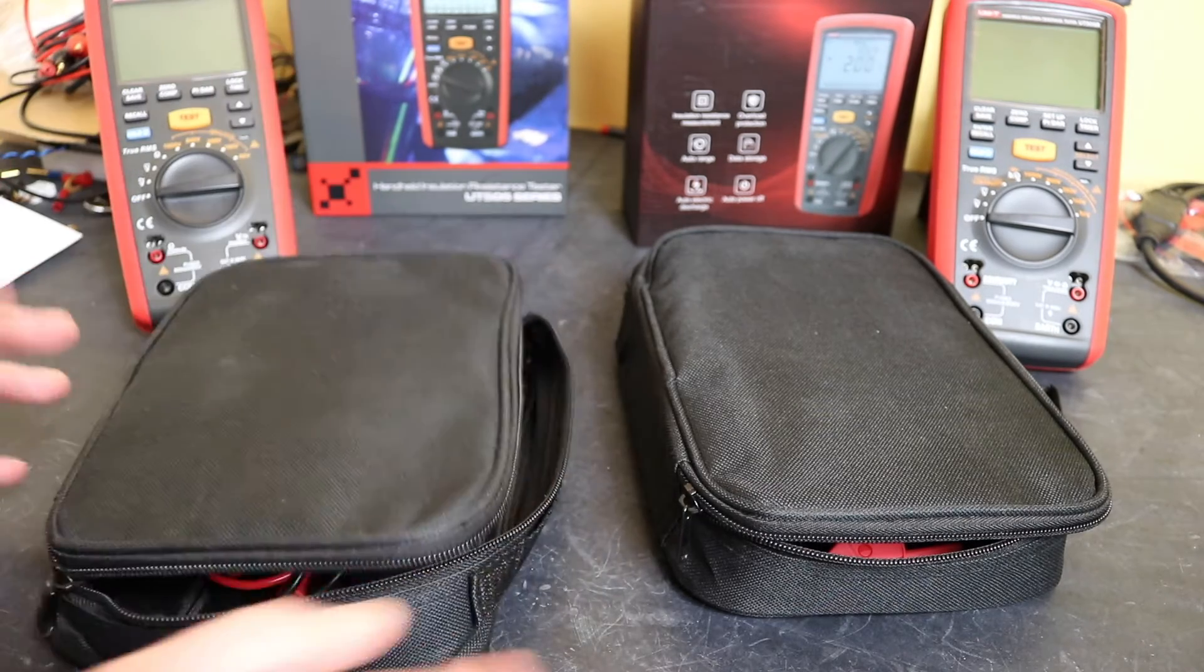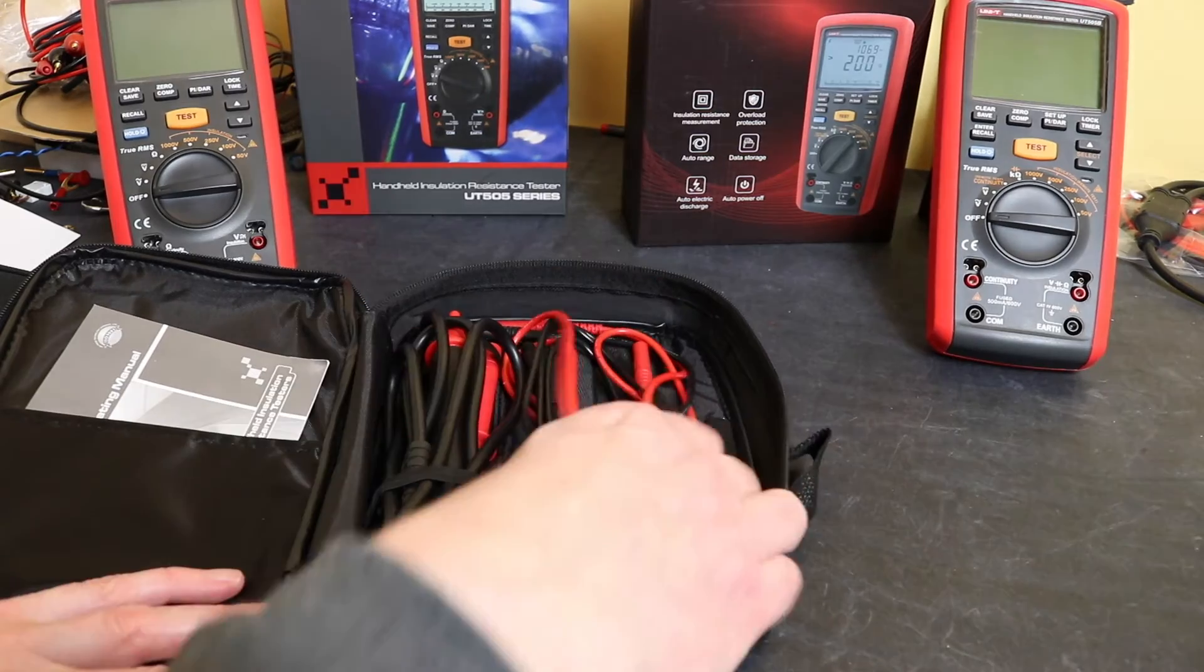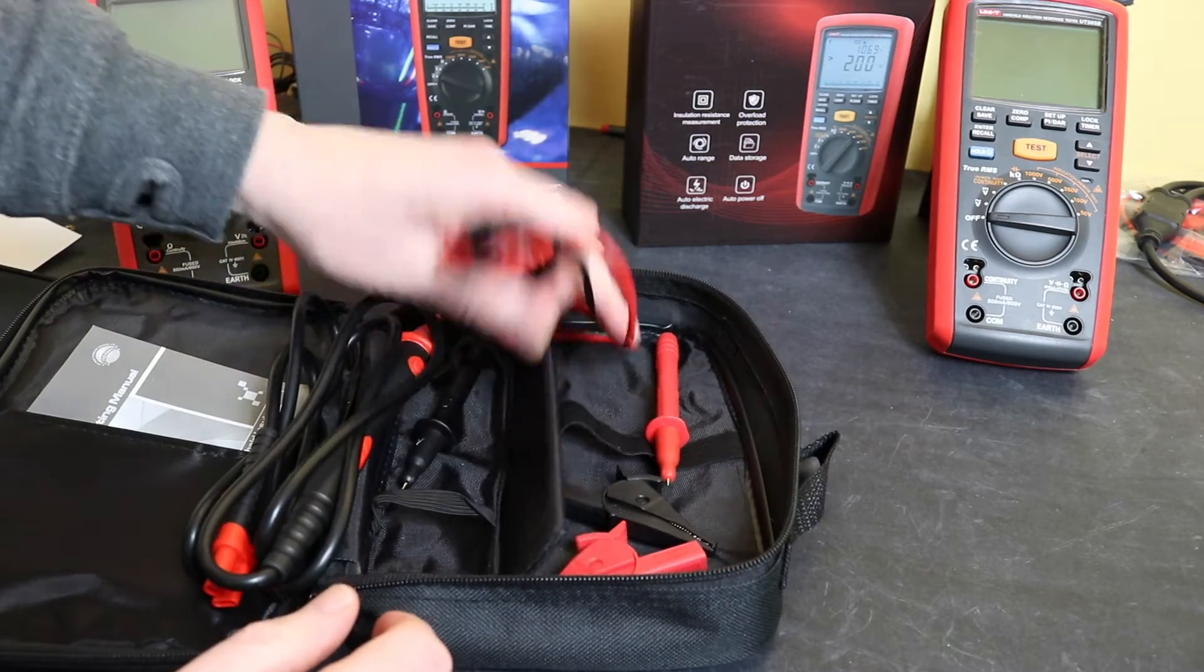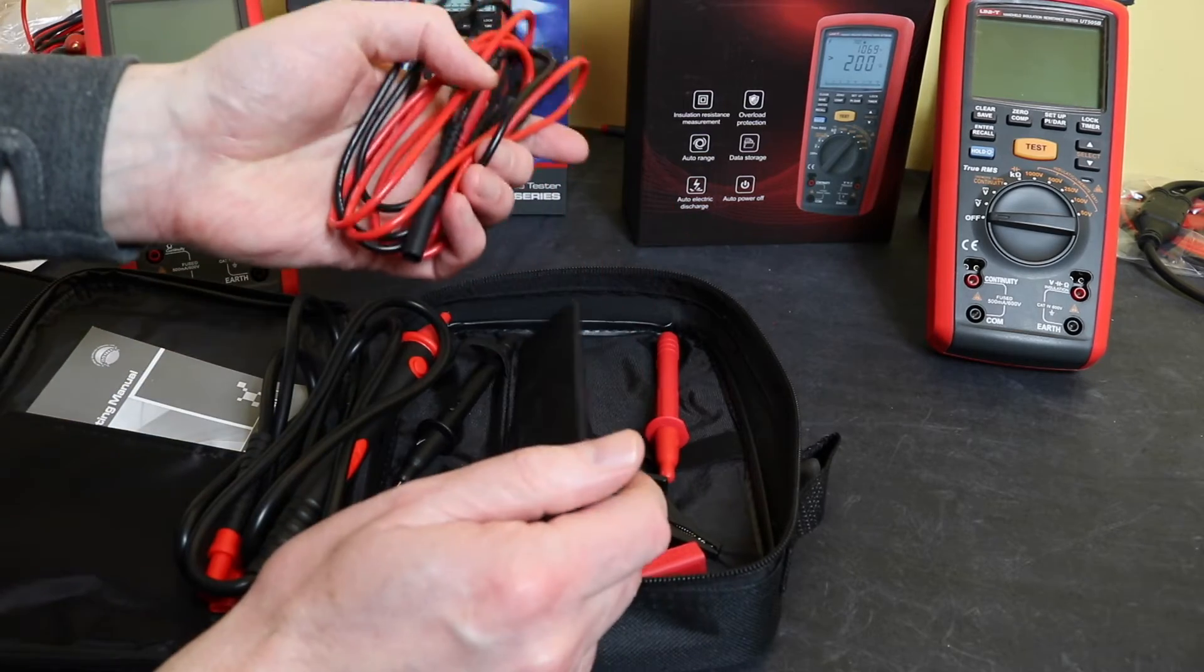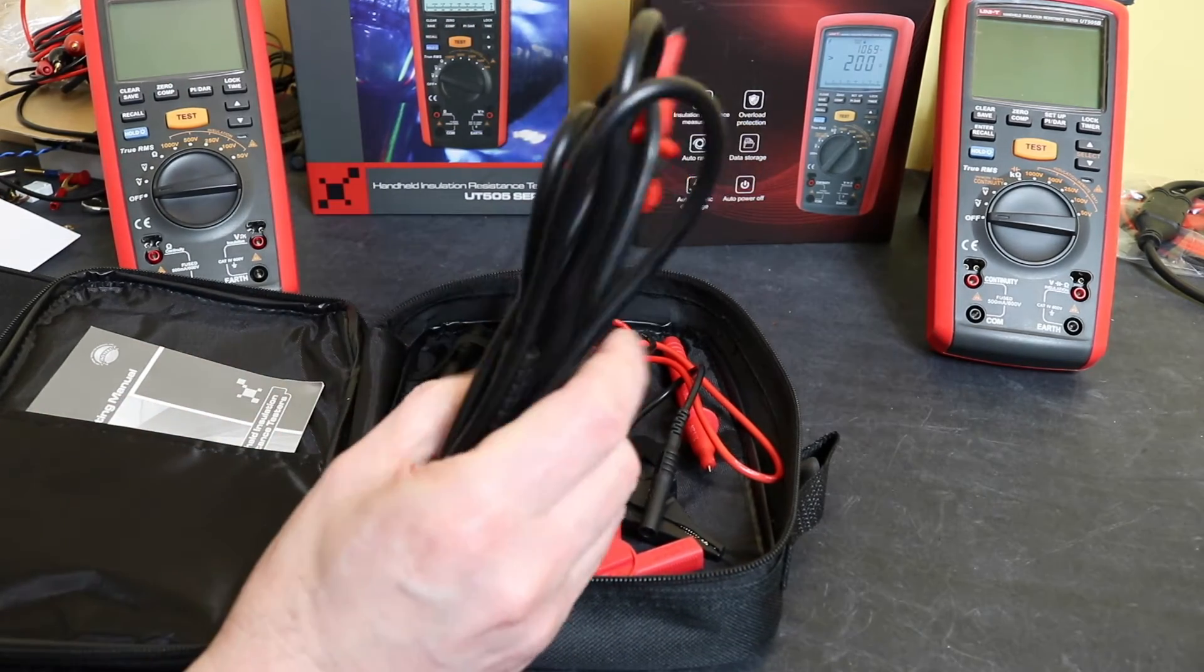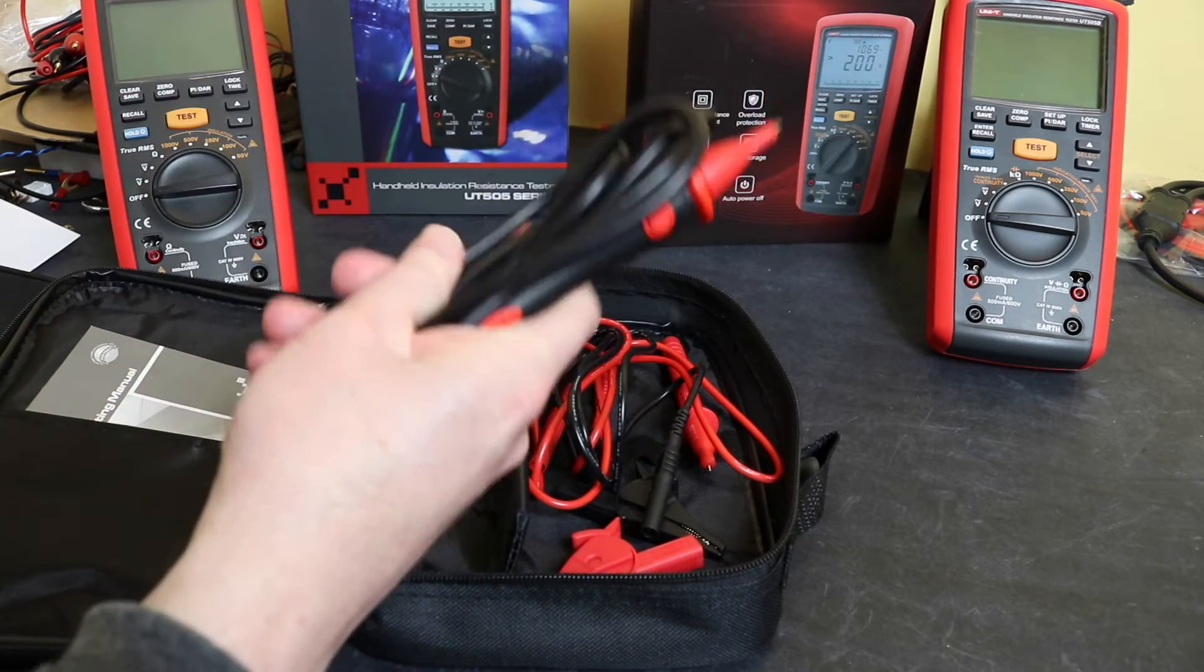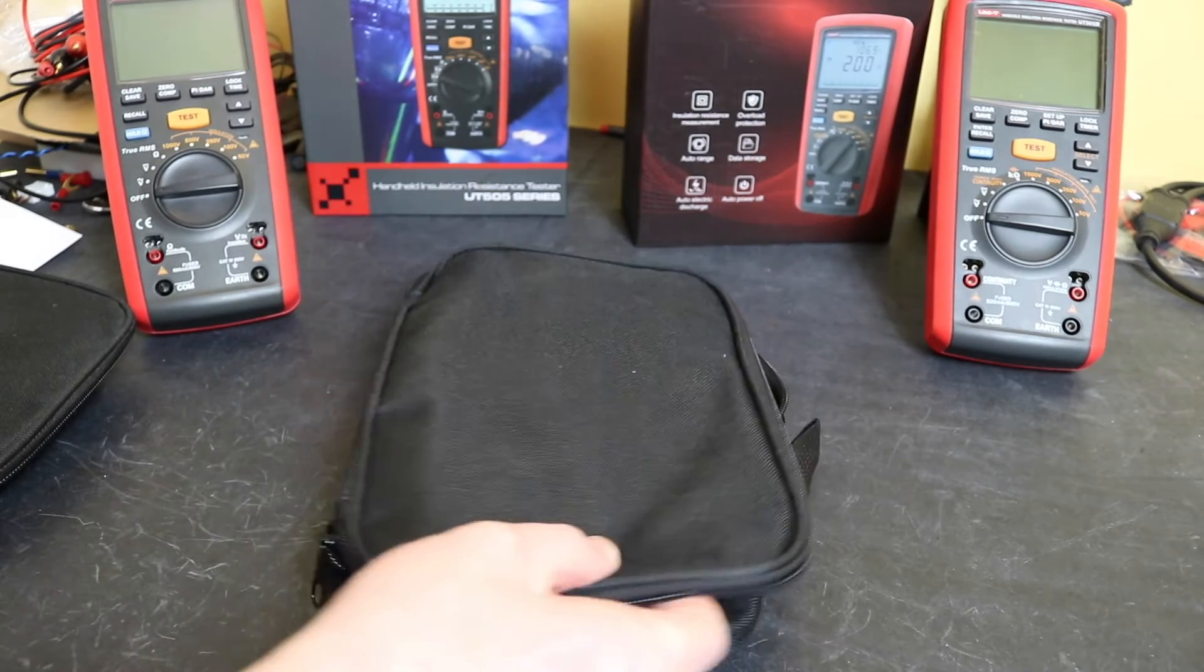For the UT505B, same case, same layout for it, same croc clips. The test probes - same test probes again with shroud on there for the GS38 compliance which can be removed. The test leads on this, although they are straight jacked and similar, these are actually silicon - much softer, much more flexible test lead, better quality test lead with the UT505B than you get with the UT505A. You can also get the remote probe, comes as default with 505B there. This will work with the 505A as will the remote probe from the Fluke 1587 as well, but it's included with the B version but not with the A version.